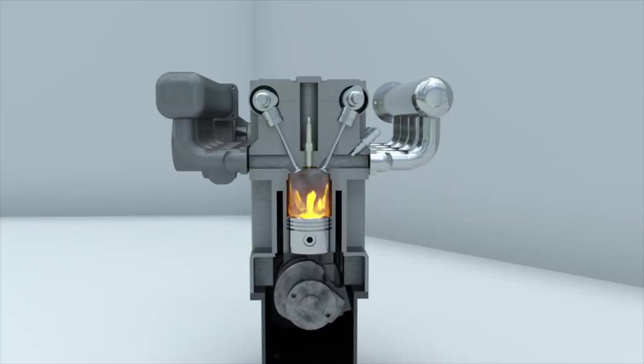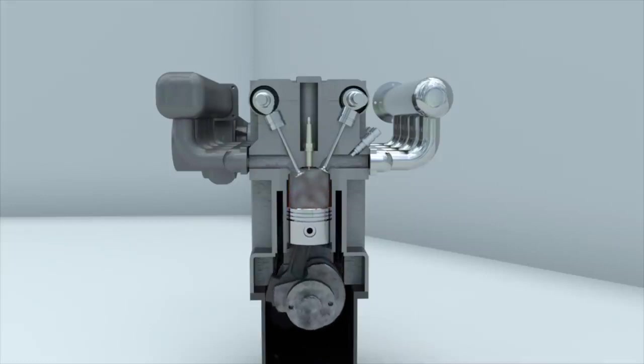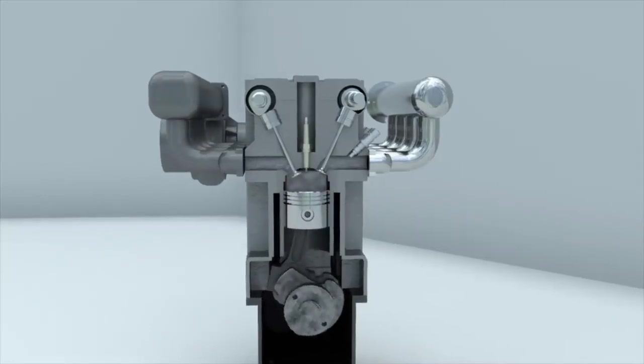The exhaust gases are then forced out of the cylinder by the piston and move towards the turbine. The particles of gas act upon the blades of the turbine wheel, causing it to rotate.